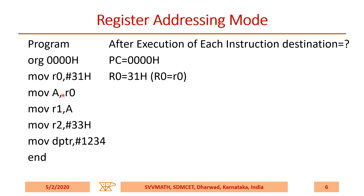When MOV A, R0 is executed, R0 content is moved to the A register. Similarly, when we execute MOV R1, A, the A content is moved to R1. Now R0's value was 31H, hence 31H is copied to A, and A is having 31H, hence R1 will become 31H.